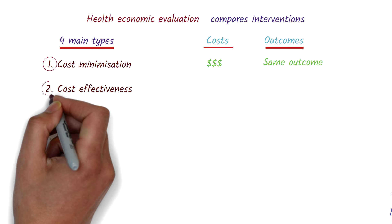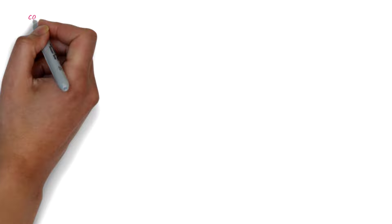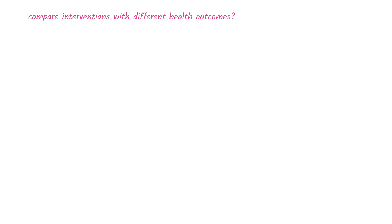A cost-effectiveness analysis compares the cost per natural units for different interventions. But what do we do if we want to compare interventions that have different health outcomes? For this, we use a type of economic analysis called a cost-utility analysis.